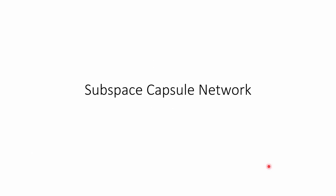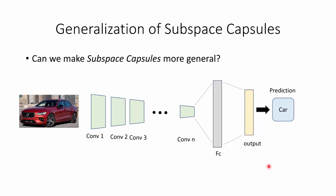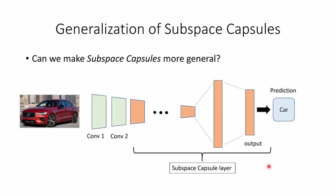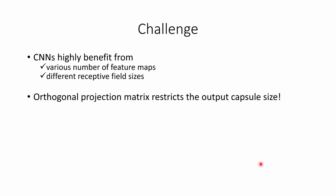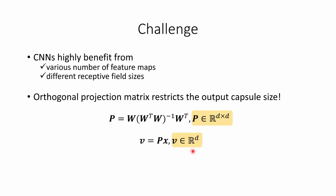Now we want to introduce the subspace capsule network. The idea is that orthogonal projection is good, but we only applied it on the last layer. Can we make it more general and apply it in other layers as well? There is a challenge: CNNs highly benefit from various numbers of feature maps and different receptive field sizes. But the orthogonal projection matrix restricts the output size of the capsule — when we use an orthogonal projection matrix, the output capsule has the same dimensionality as the input feature vector. So the CapPro layer keeps the dimension of the capsule vector fixed.